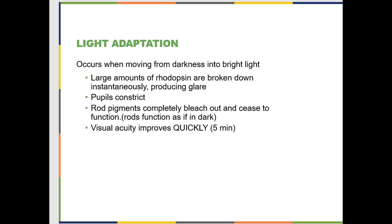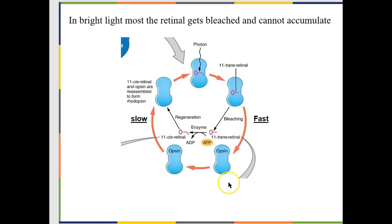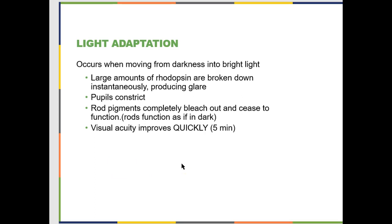Light adaptation: imagine you're lying in bed in a dark room and someone turns on the light. Because it was dark, your rods have lots of rhodopsin and are ready to go. The bright light hits your rods causing over-stimulation, which your brain interprets as glare. Your pupils constrict, and in a short period your rods run out of rhodopsin and begin functioning as if they're in the dark. Your cones are fine, so once the glare goes away your visual acuity improves relatively quickly — within just a couple of minutes.